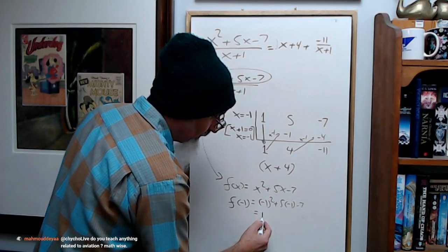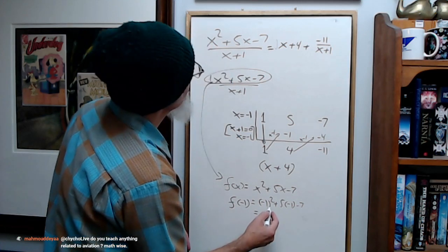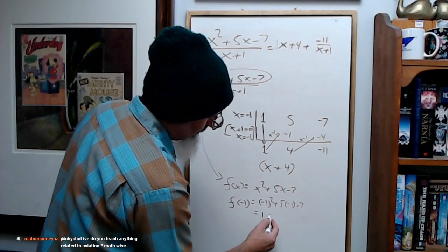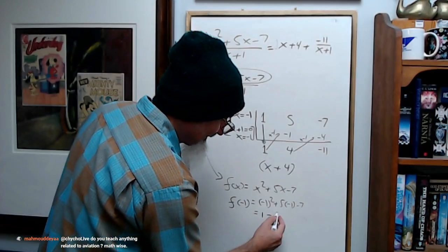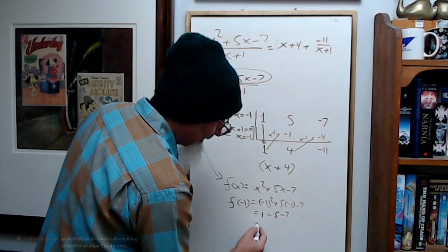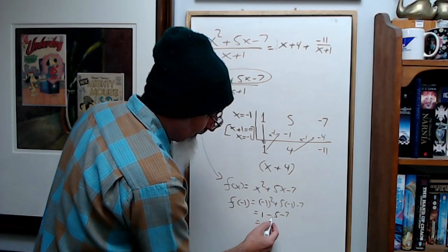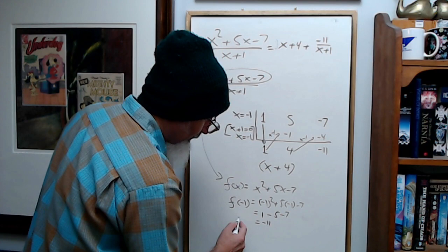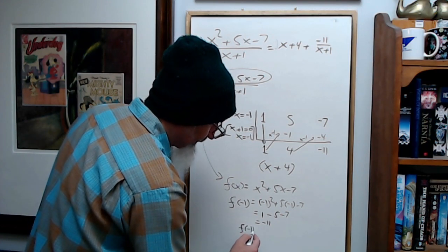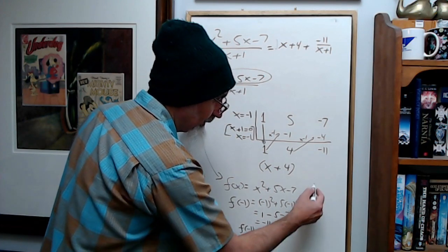This is going to be 1 minus 5 minus 7, which is going to be 1 minus 5 is negative 4 plus negative 7 is negative 11.